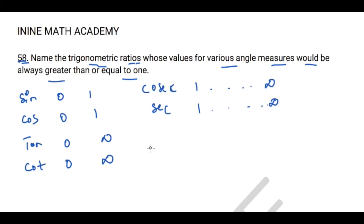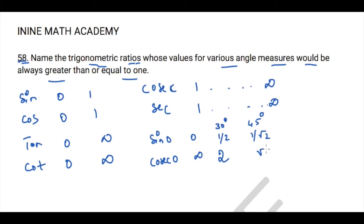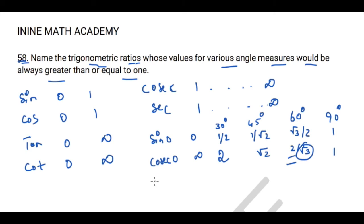To illustrate: cosec0 = ∞, cosec30 = 2, cosec45 = √2, cosec60 = 2/√3 (which is greater than 1 since √3 < 2), and cosec90 = 1. Since cosecant and secant are complementary in nature, the same pattern repeats for secant. Therefore, cosecant and secant are the only ratios whose values are always greater than or equal to 1.